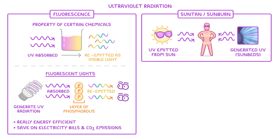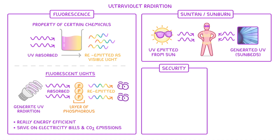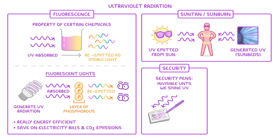Another use of UV radiation is in security. By using special security pens we can mark property and write codes that are completely invisible until we shine ultraviolet light on them. We do the same thing with passports and banknotes, which makes them harder to copy and means we can detect forgeries more easily.